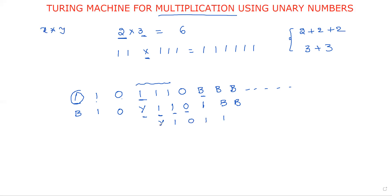Observe carefully — I cancelled this one; for this one I copied three ones. Now move to the left side. Whenever we are moving to the left side, the same process applies. For each one, all the Y's are converted into ones. The same process is repeated. Now I will implement this using a Turing machine.